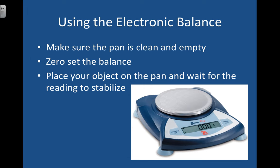What will we be using this year? We're going to use the electronic balance because it's easiest and quickest. So the way to use it is you make sure the pan is clean and empty, and then you're going to zero set the balance, and the way you do that is by pushing the on-off zero button here. Sometimes it's its own button, and sometimes it's the same as the on and off button. Once your scale reads 0.00, then you're going to put your object on the pan, and you'll wait for the reading to stabilize. So wait until it stops changing, and then once it does, you can read your mass.